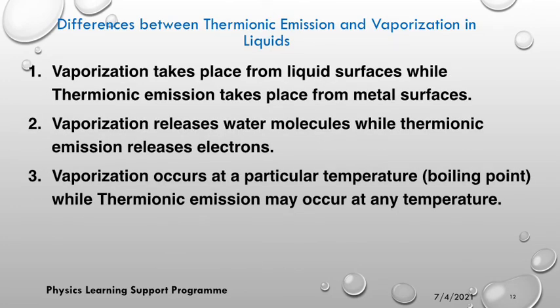There are also differences. Vaporization takes place from the surface of liquids, but thermionic emission takes place from the surfaces of solid metals. Vaporization releases water molecules, but thermionic emission releases electrons. Vaporization occurs at a particular temperature — perhaps the boiling point — while thermionic emission may occur at any temperature at all.